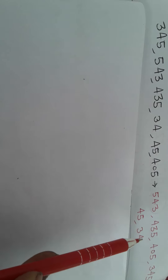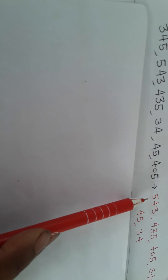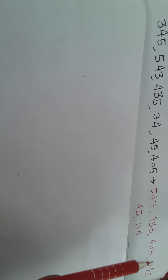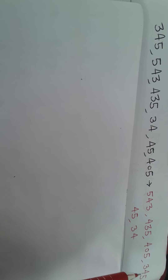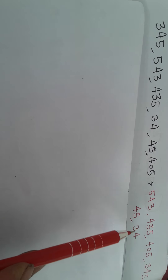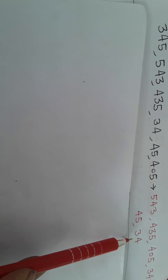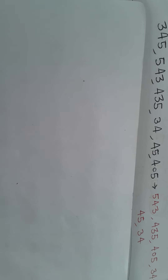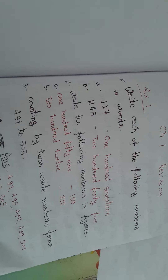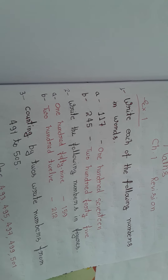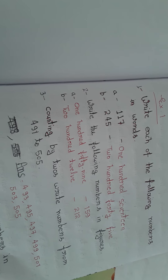The smallest number comes last. So the order is: 543, 435, 405, 345, 45, 34. That's all for today's lesson. Please note down everything taught today in your copy.